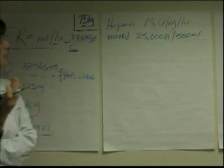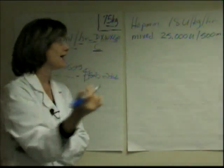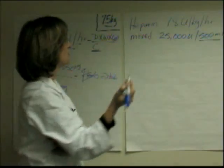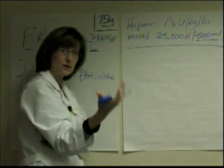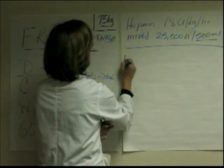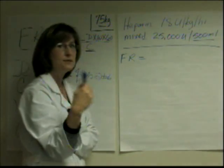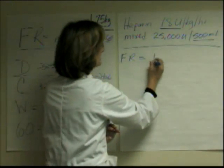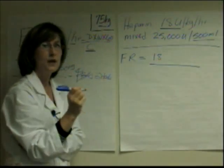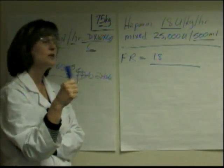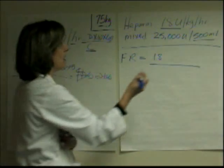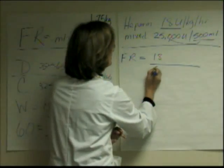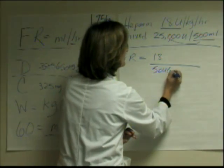When we talk about concentration for these IV drips, I don't want the concentration in how much is in the whole bag — I need to know how much is in each milliliter. To figure that out, divide 25,000 by 500, just like it is. You'll see there are 50 units of heparin in each milliliter in that bag.